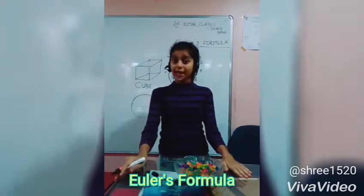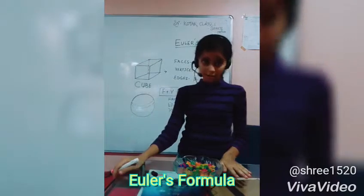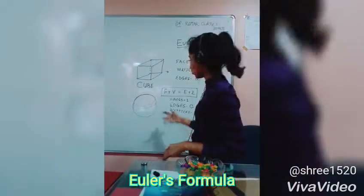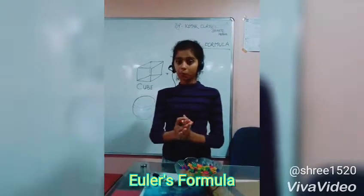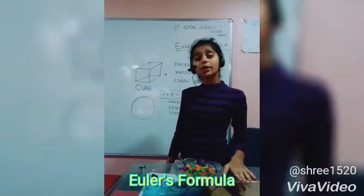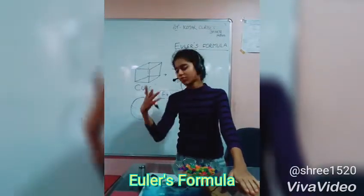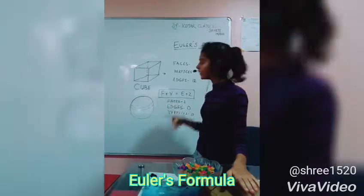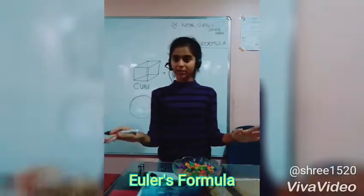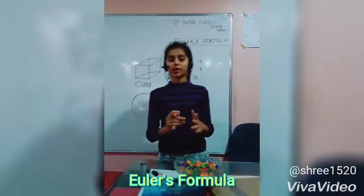Have you ever wondered about a 3D figure with no vertices or no edges? Yes, there is one figure like this, which is known as a sphere — the ball you play with. For a sphere, there is only one curved surface, which is its face, 0 edges, and 0 vertices because there are no corners.